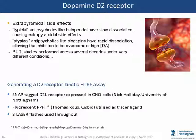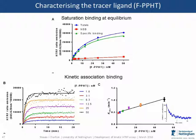For the D2 receptor assay, we utilized SNAP-tagged D2L receptors expressed in CHO cells, generated by Nick Holliday at the University of Nottingham. The tracer ligand used was fluorescently labelled PPHT — a partial agonist of the D2 receptor — provided by Thomas Roux at CisBio. Throughout these experiments we used three laser flashes on the PHERAstar. We first characterized our tracer PPHT: the top panel shows a standard saturation binding analysis at equilibrium, with very low nonspecific binding even at relatively high ligand concentrations. The panel below shows the association kinetic assay of the tracer alone at different concentrations, very nicely obeying the law of mass action binding to a single site, from which we derive on and off rates for the competition association assay calculations.